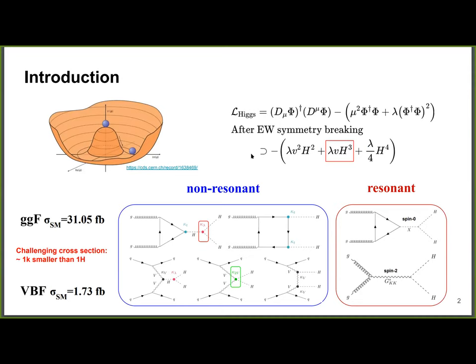The Higgs boson pair production is motivated by probing the real Higgs potential and verifying the standard model. The Higgs potential looks like a Mexican hat, and electroweak symmetry breaking produces the trilinear coupling of the Higgs boson, corresponding to Higgs pair production. This search targets two kinds of signal: non-resonant and resonant, depending on whether the di-Higgs mass appears as a resonant peak.